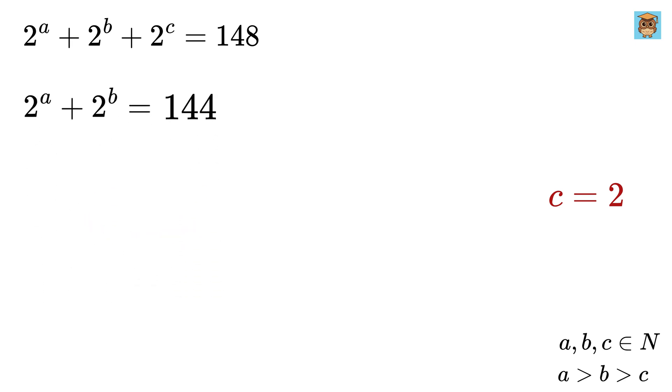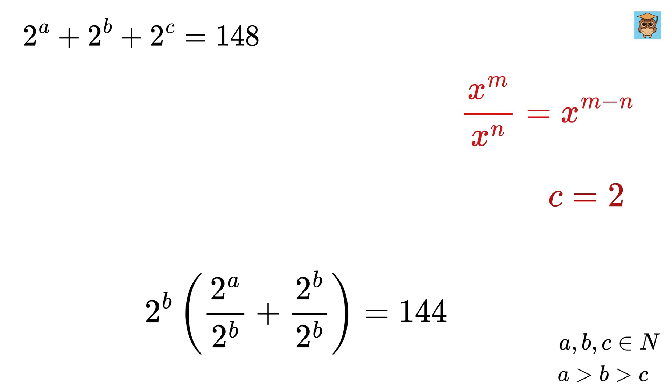Now, let us repeat the same step. Multiply and divide both sides of this equation with 2 raised to the power of B. So, we can take this 2 to the B here and divide it with each term individually to get this. This will become 2 to the B times 2 to the A minus B plus 1 equals 144.